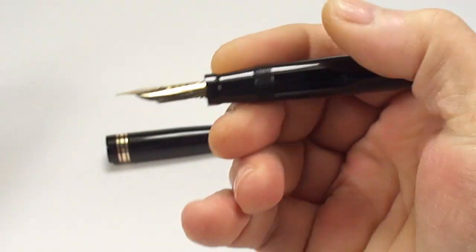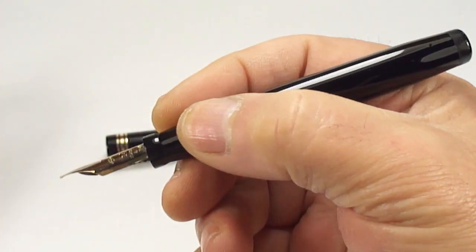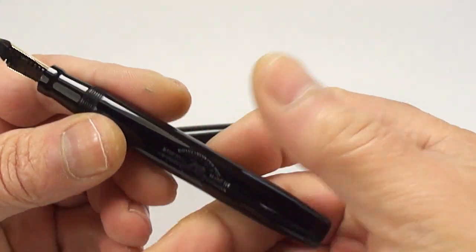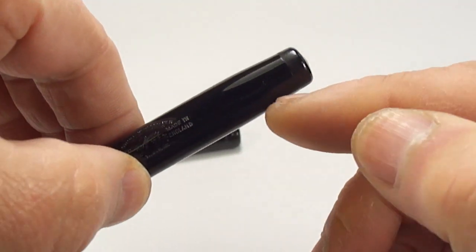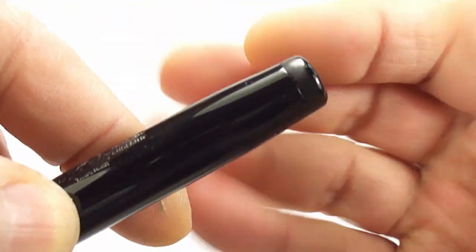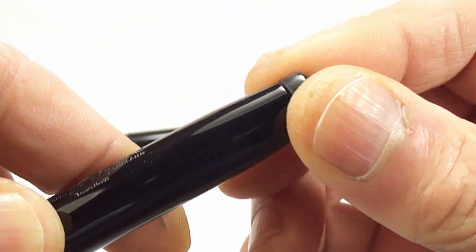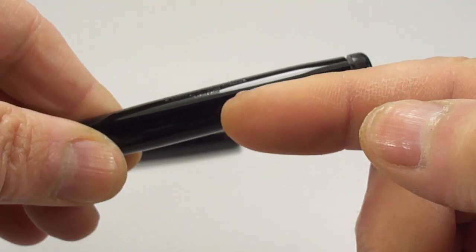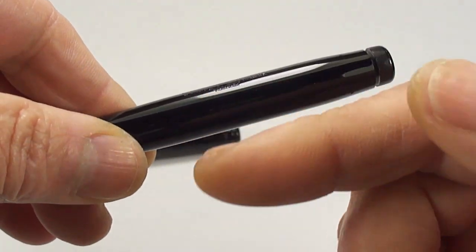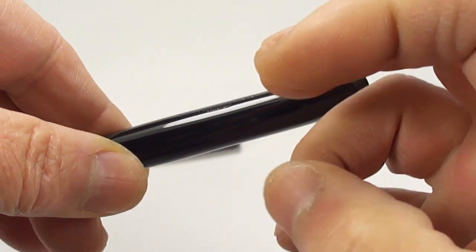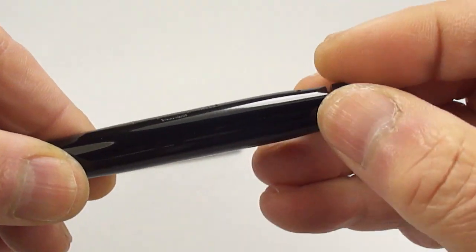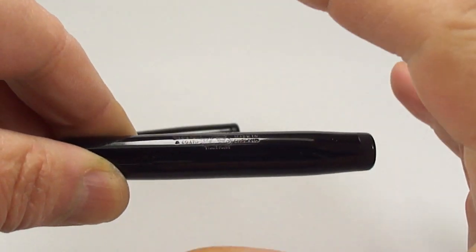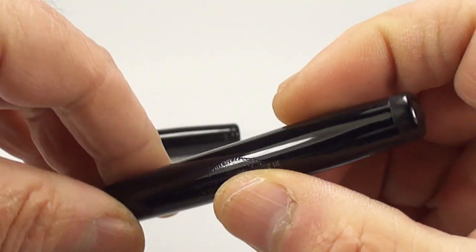Now how do we fill the pen? Well, it's a leverless. We've got this knurled knob here. What we do is simply turn the knob like so. Inside there's a bar that catches the sack and in effect it wrings the sack. Then once we turn it back, the bar goes back into place and the sack opens up and takes ink.